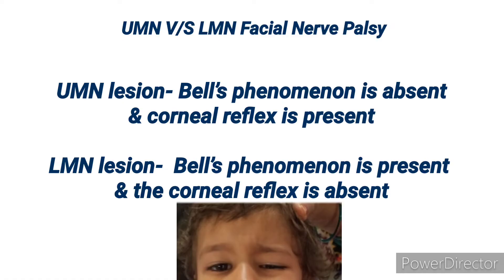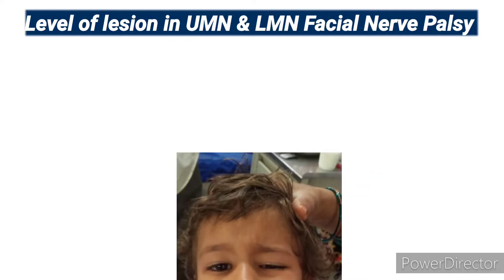Bell's phenomenon will not be present in UMN lesion, while it will be present in LMN lesion. Corneal reflex will remain normal in UMN lesion while it will be absent in LMN lesion. Now, the clinical approach to the level of lesion in both upper motor neuron and lower motor neuron lesion.